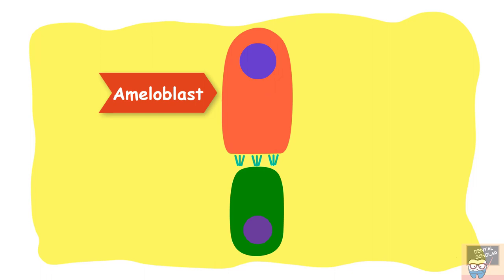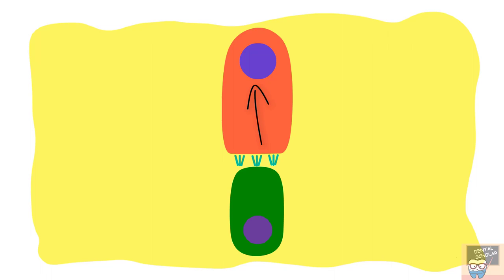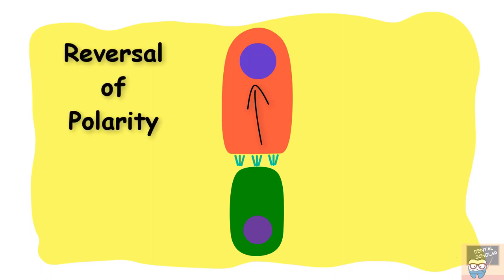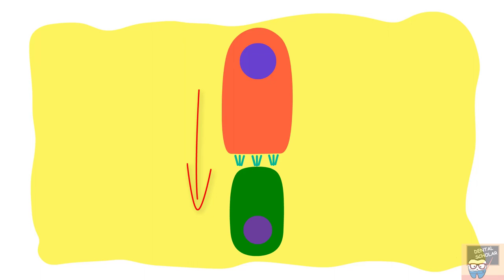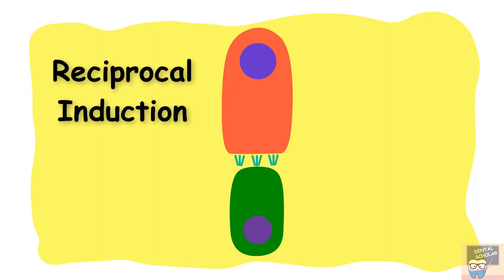During this differentiation, the nucleus of the ameloblast migrates from its distal end to its proximal end, which is known as reversal of polarity. You must notice that it was the inner enamel epithelial cell that first released the growth factor which led to differentiation of odontoblast, and only then the product of odontoblast led to the differentiation of ameloblast. This interaction is known as reciprocal induction.